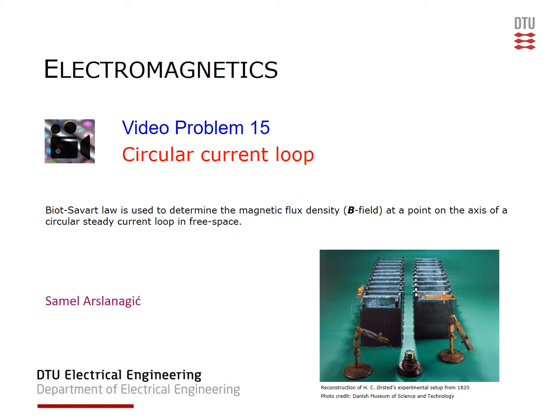Welcome to video problem 15. Here we are looking at the circular current loop configuration and we will use Biot-Savart law to get the B field on the axis of this loop which is located in free space.